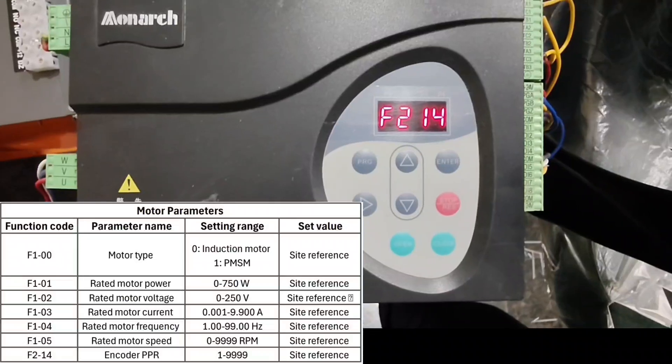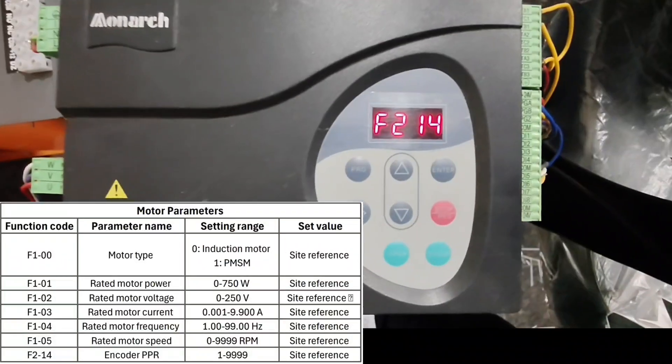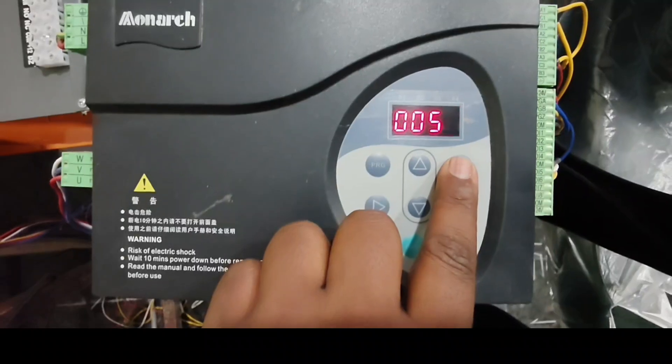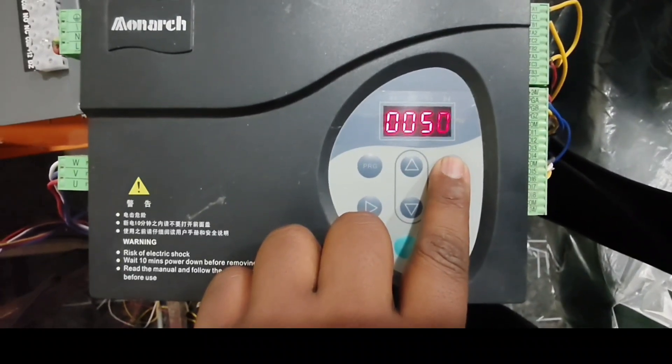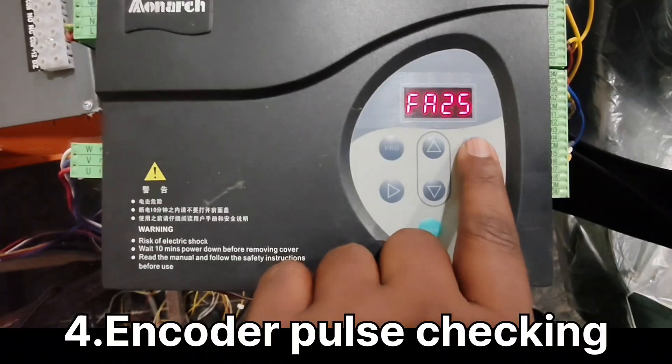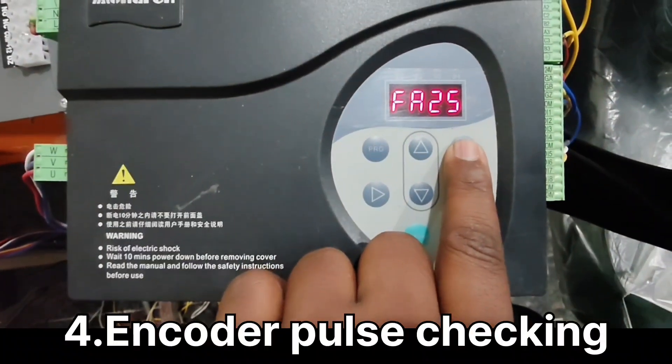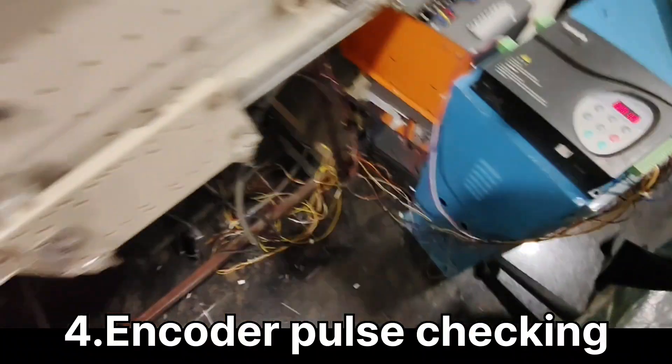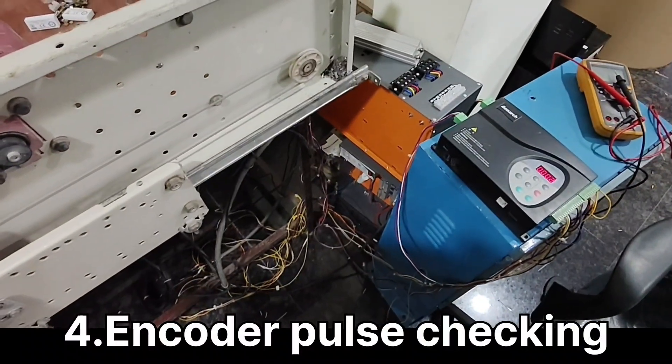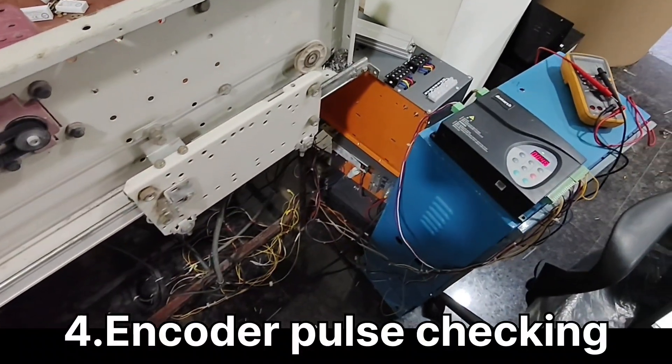After this, door motor encoder PTR value needs to be set in F214 to 50 pulse. Check encoder pulse in FA25. Move the doors and the value will change.